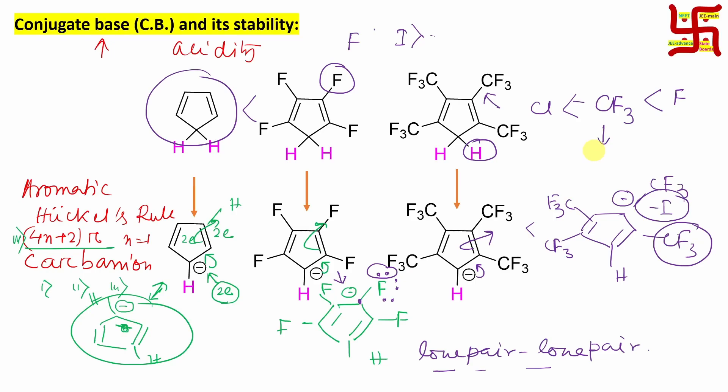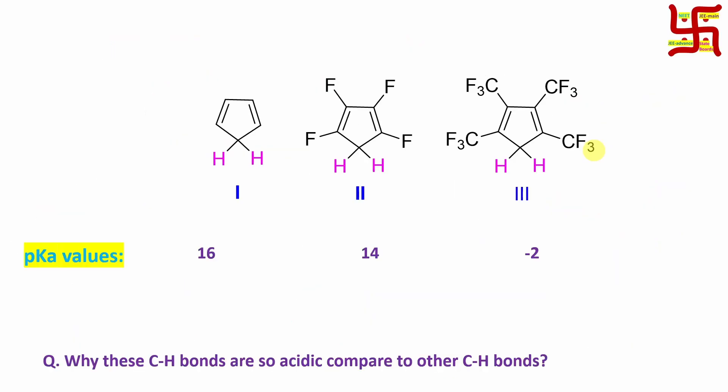Now, I think still you don't believe me. Let me give you the proof: experimental proof. pKa value rule is that higher the pKa, lesser acidity. So here cyclopentadienyl pKa 16, tetrafluoro derivative 14, so I can say this one is more acidic. But look at the value: minus 2, significantly stronger. So among these three, this is the most acidic.